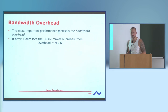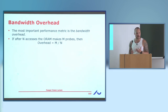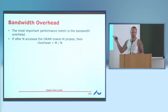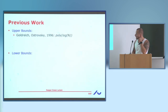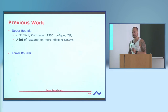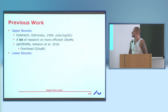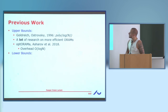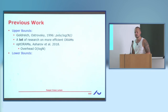What you care about is the bandwidth overhead: if I'm simulating N accesses into memory and I'm doing M probes to hide what the sequence was, then my overhead is M over N — the factor of extra probes you're doing to simulate your program. From the upper bound point of view, already in the first paper that introduced the problem there's a polylogarithmic upper bound. There has been a lot of research on more and more efficient ORAMs. Just last year there was an ORAM titled OptORAMA, suggesting it's optimal, obtaining an overhead of just log N.